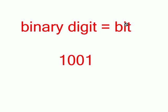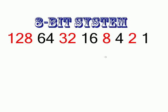The word 'bit' comes from 'binary digit' — B-I, T, bit. For example, a four-bit system means you have four numbers, like 1-0-0-1, or 1-1-1-1, or 0-0-0-0. However many numbers you have, that's how many bits are in your system. In binary, instead of incrementing by factors of ten, we increment by factors of two: 1, 2, 4, 8, and so on, each time multiplying the previous number by two.